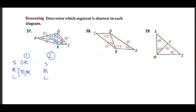In triangle 2, if this angle is 40 degrees, then this angle is 50 degrees. The smallest angle is 40 degrees, which means RS is the smallest side, OR is the medium side, and QS is the largest. QR appears in both triangles — it is the medium side for triangle 2, which means RS is smaller than QR. So the smallest side is RS.